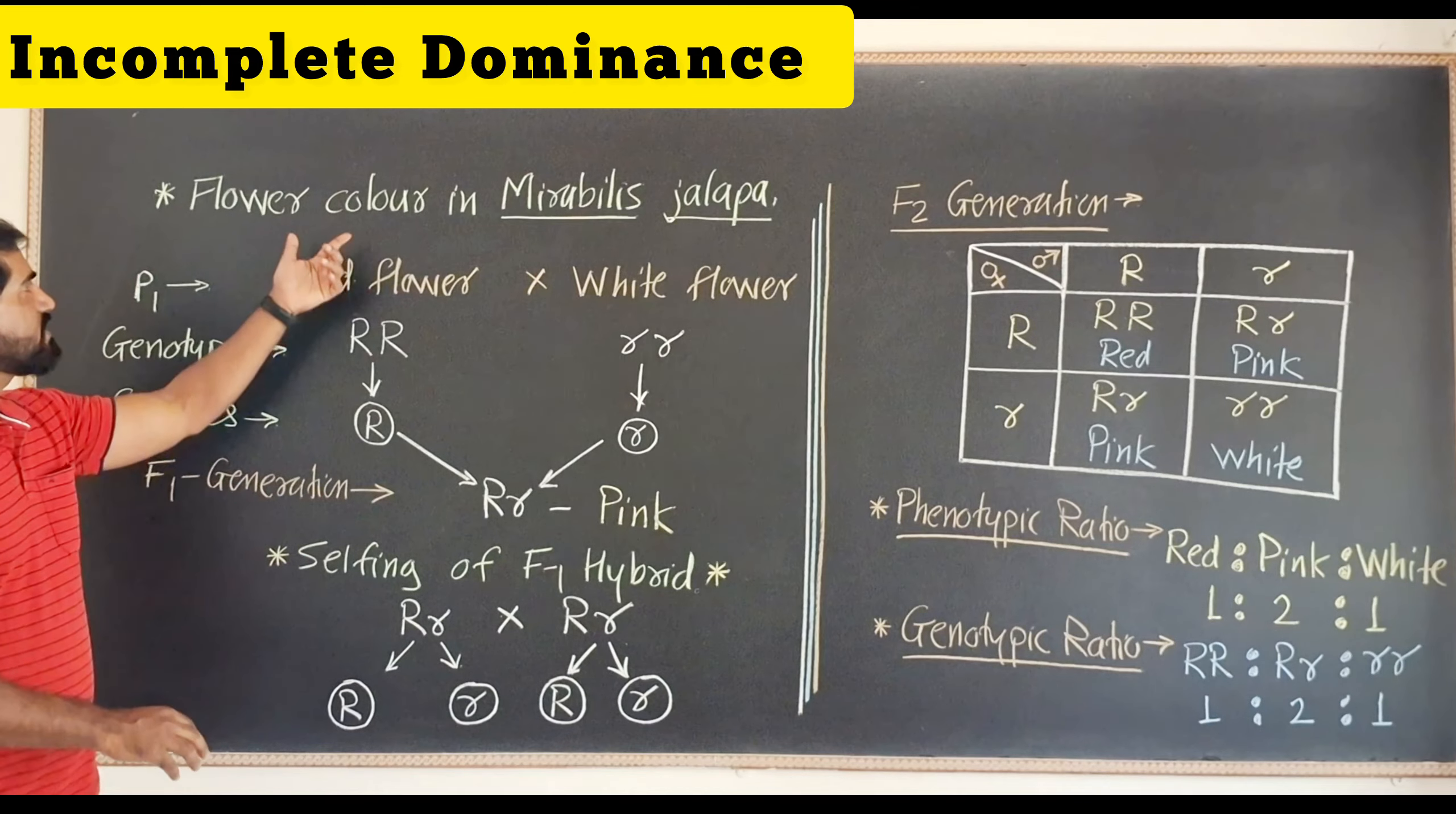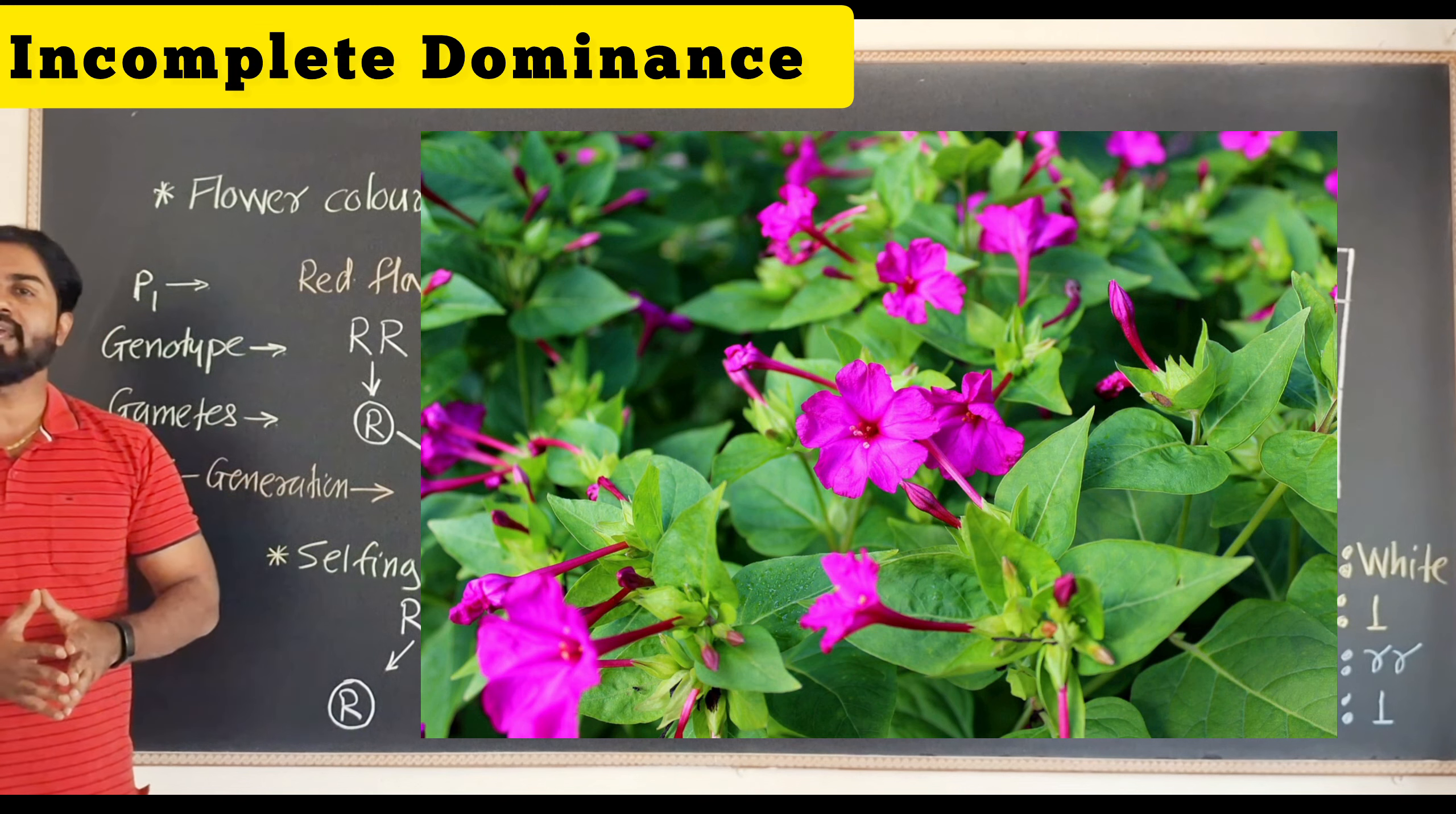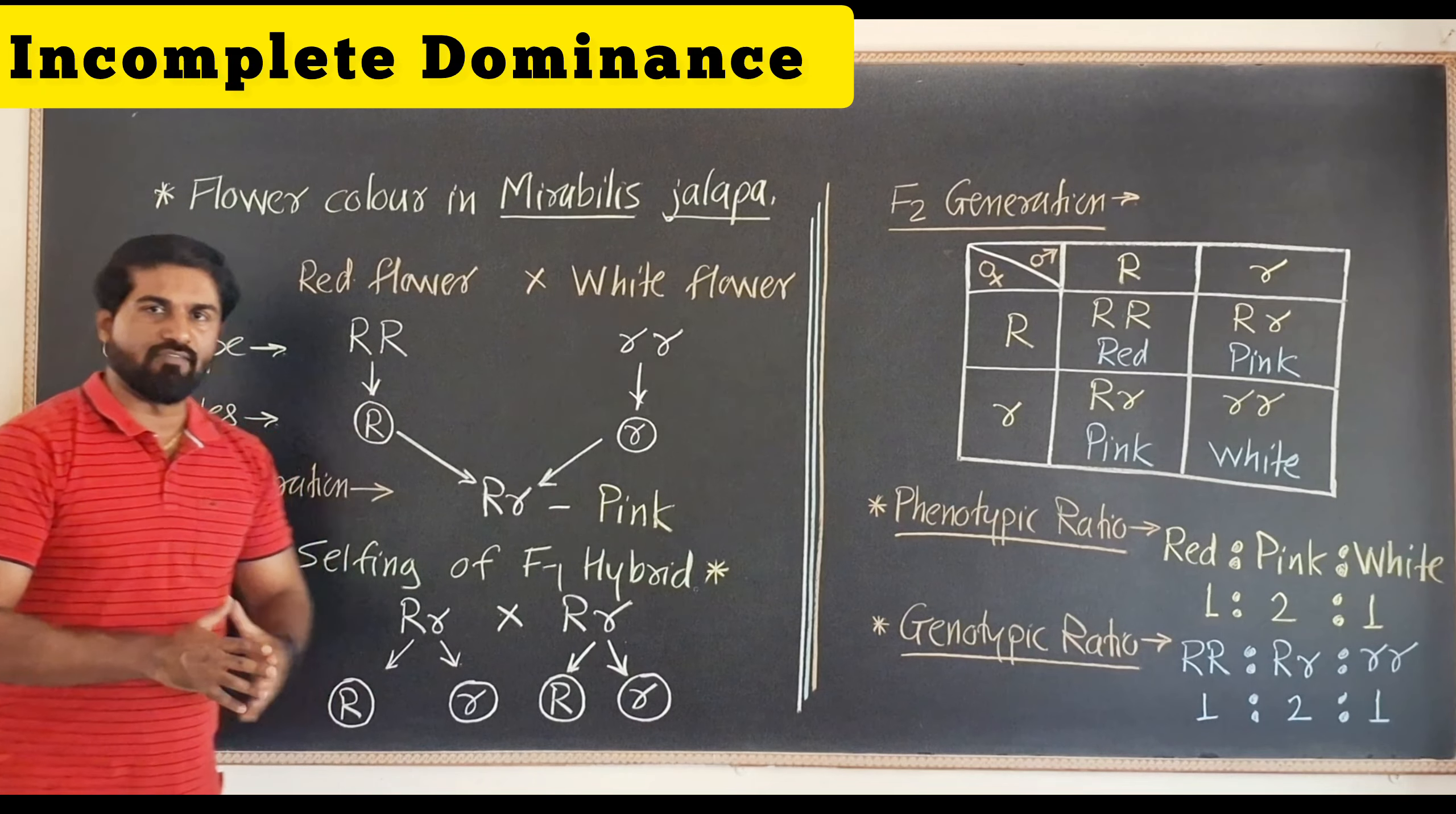The example here we are discussing is flower color in Mirabilis jalapa. You can see the plant Mirabilis jalapa on your screen. Now it shows red flowers or white flowers.